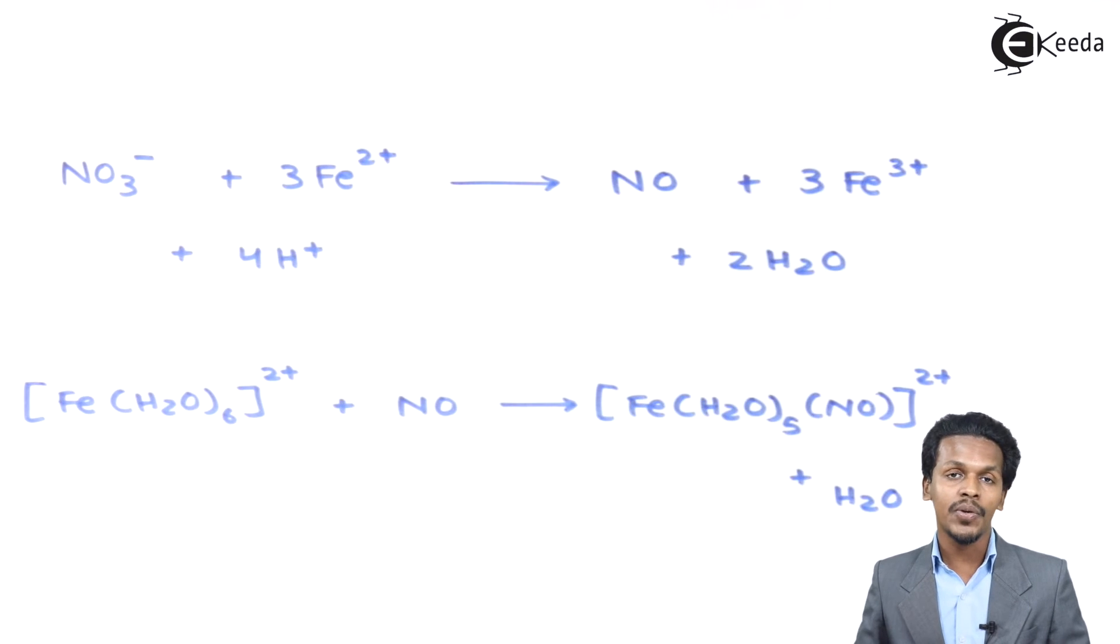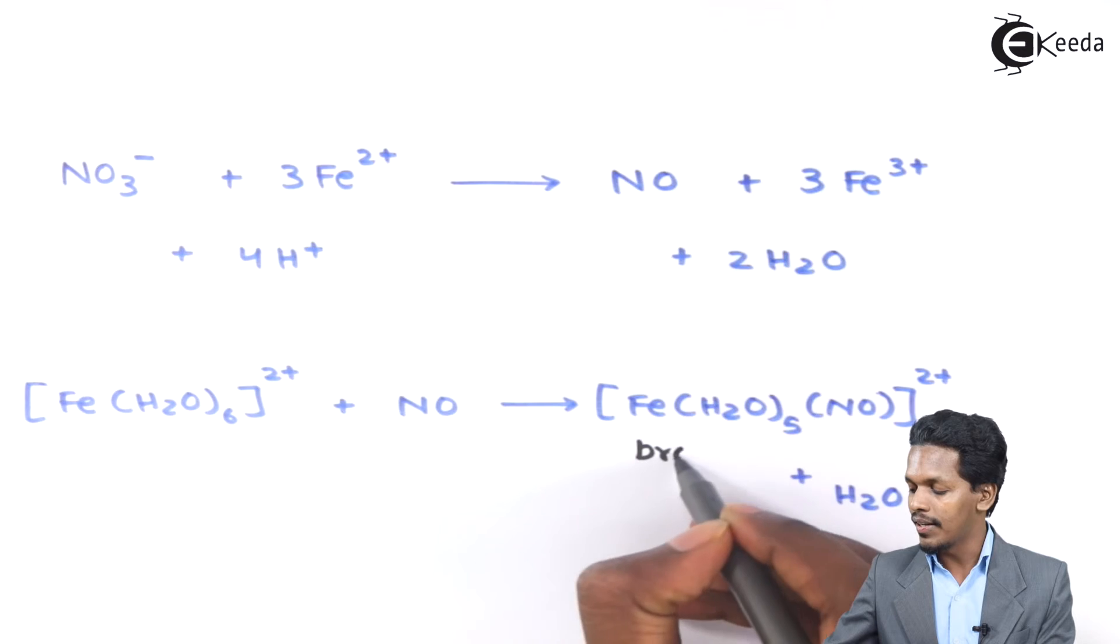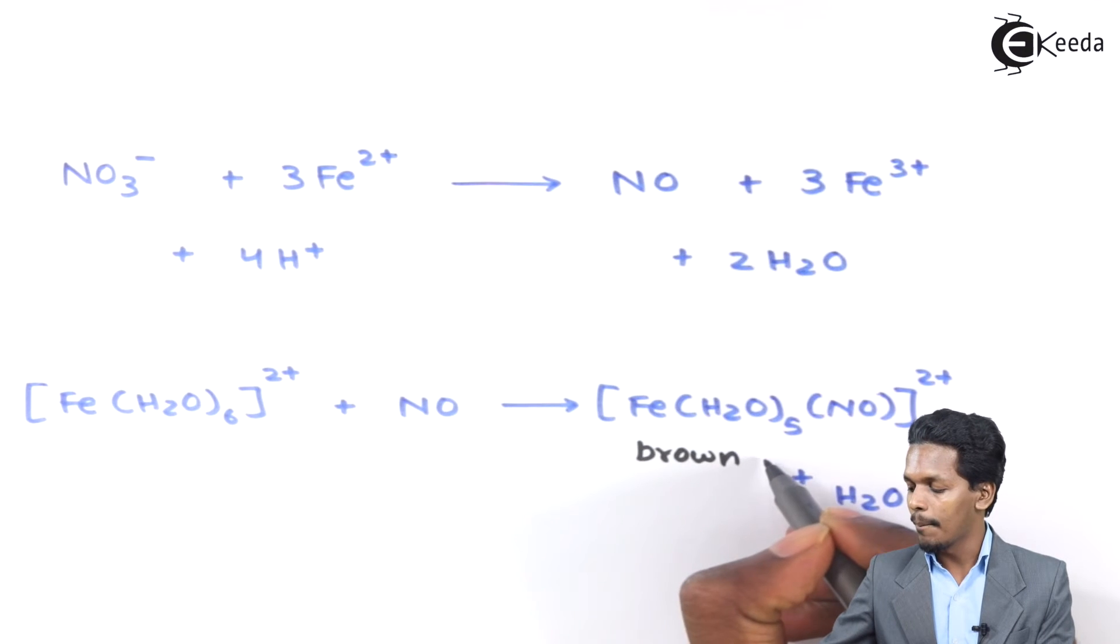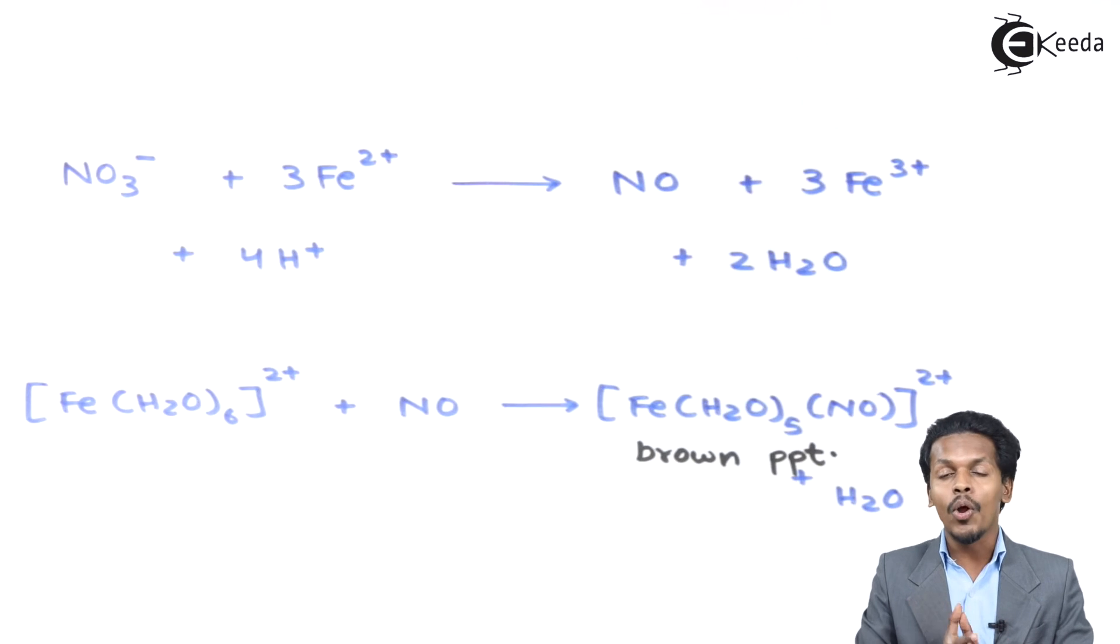This is a brown complex or brown PPT. This brown complex forms a ring between the two solutions, and that's the reason we call it the Brown Ring Test. This helps us understand whether the presence of nitrate ions is there or not for a particular compound.